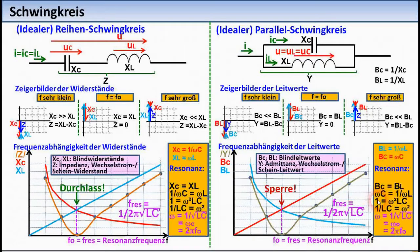From the course of the function graphs for Z and Y, it can be seen that a series resonant circuit passes the current at the resonant frequency, but a parallel resonant circuit blocks the current.